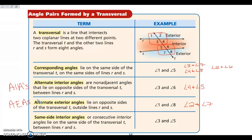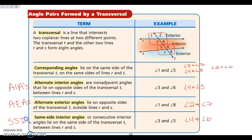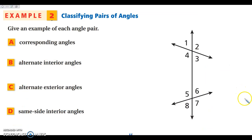Same side interior angles are in the interior region between the two lines, and they are on the same side of the transversal. Angles 3 and 5 are on the same side of the transversal — those are same side interiors. Angles 4 and 6 are the other pair. We abbreviate these as SSIs. There's no standard abbreviation for corresponding angles — I just write CORR.